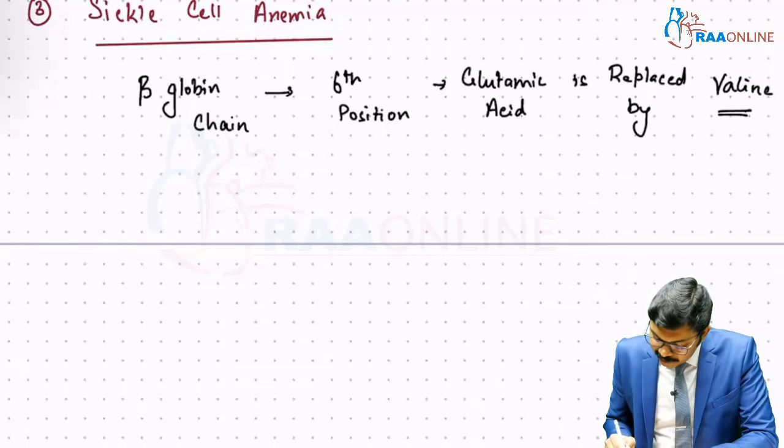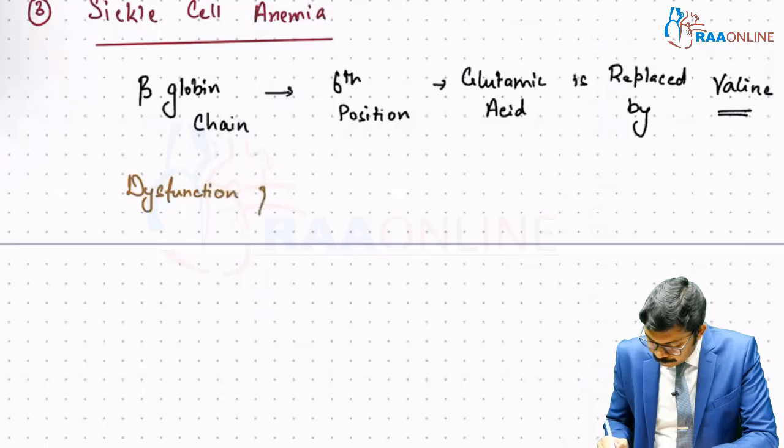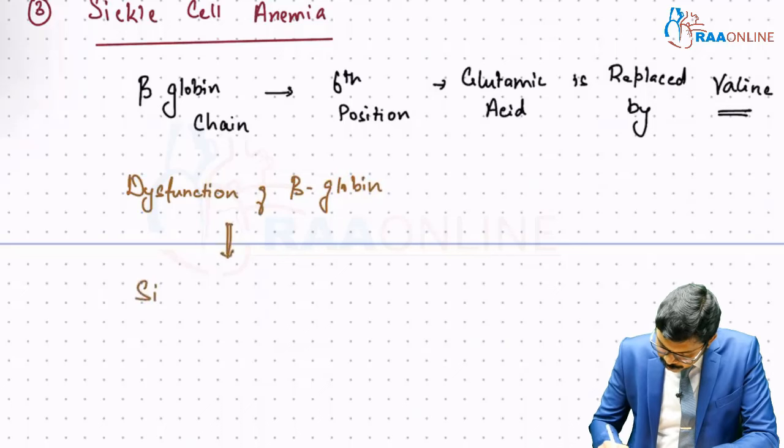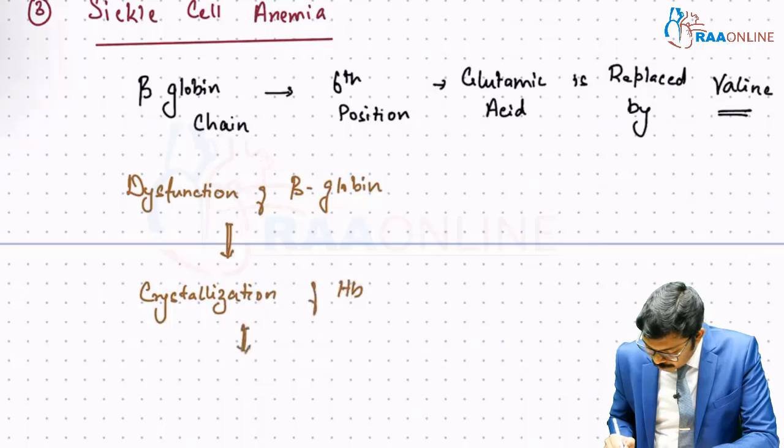As a consequence, there is dysfunction of beta globin chain. This dysfunction leads to crystallization of hemoglobin, and this crystallization of hemoglobin leads to sickling.